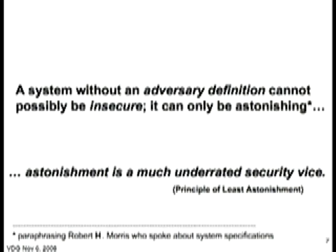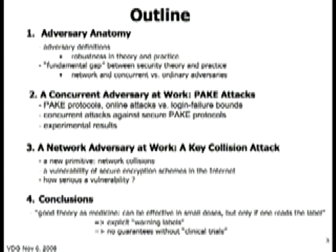I'm paraphrasing something that Bob Morris — the father of the famous Robert Morris — said: a system without a specification cannot be insecure, it can only be surprising. What I think is that a system without an adversary definition cannot possibly be insecure — it can only be astonishing. Whenever we talk about system security, we have to have an adversary definition, because otherwise what we do is meaningless. What I'm going to do today is talk about adversary definitions and see how they are affected by technology, and then give you two examples of how one can attack protocols that are correctly proven secure with good theory, in practice.